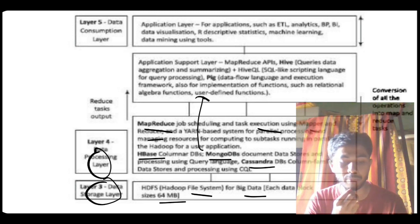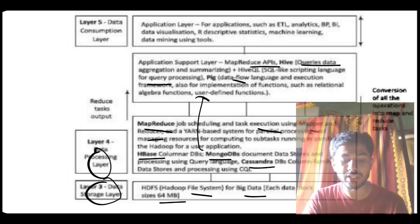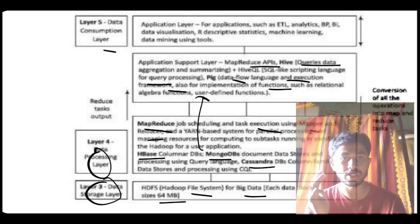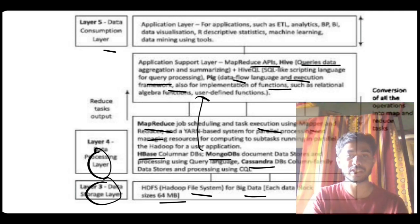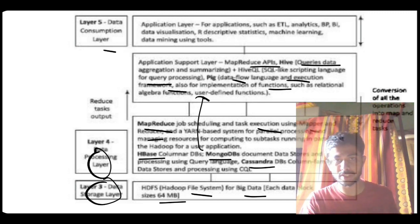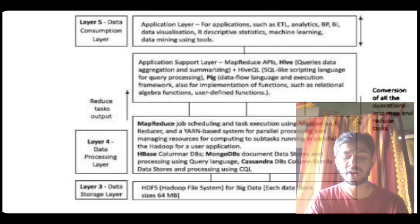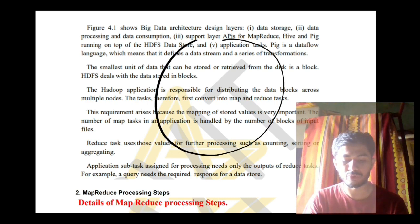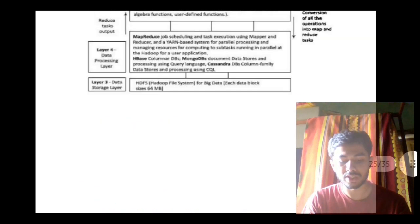In the data consumption layer, the main operations happening are Pig and Hive. In Pig and Hive, what happens is MapReduce, query aggregation, summarizing, and Pig does the data flow language execution framework and implementation of functions — these four to six points you have to mention for Hive and Pig in the data consumption layer. The last layer is visualization, reports, descriptive analysis, statistics, machine learning analysis, and data mining tools. Draw a rough sketch and explain what's happening in the top three layers.